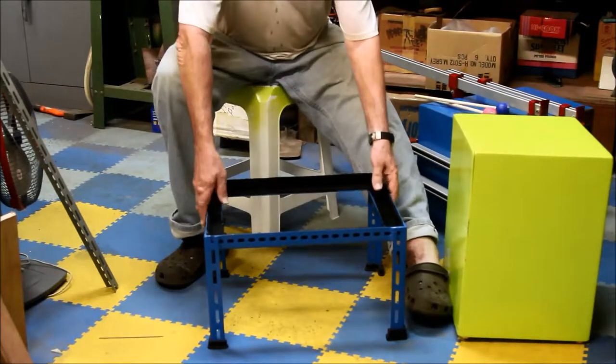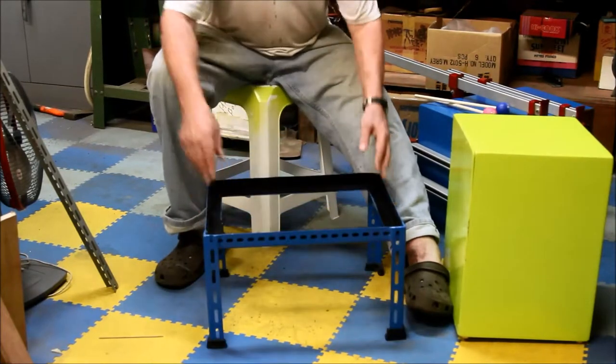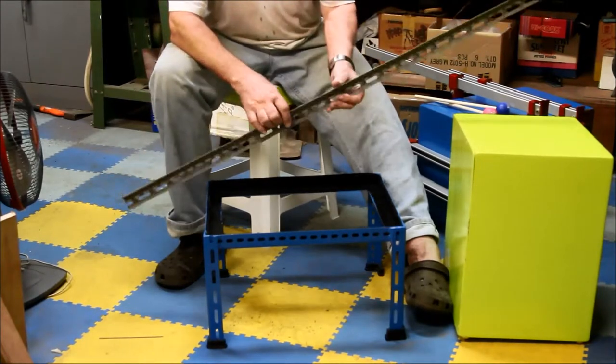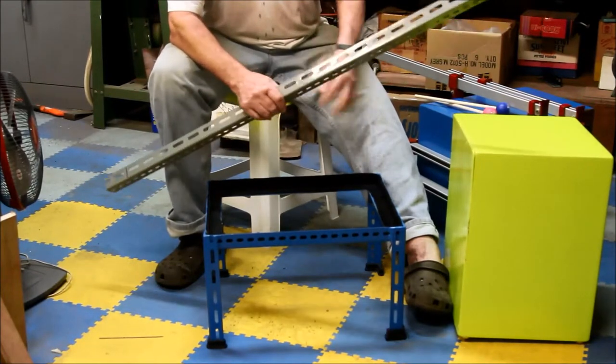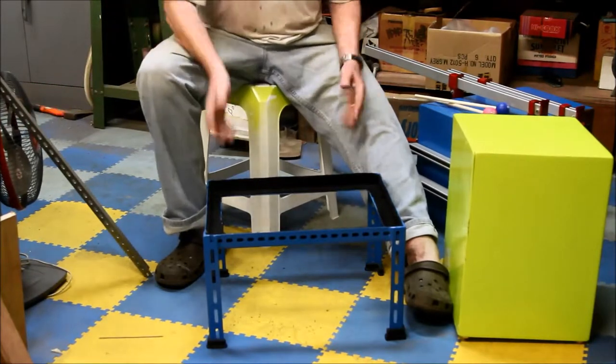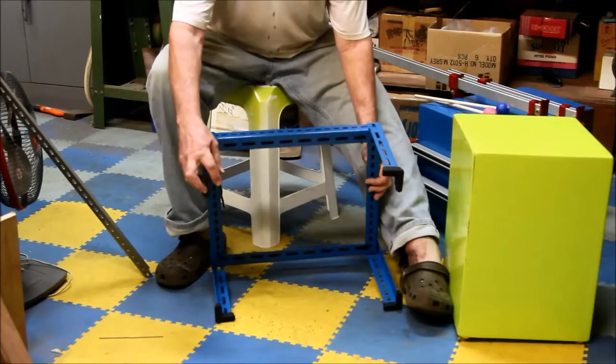We got to thinking why don't we make a little stand to put our cajon on. We had some shelving angle iron laying around the house so we decided we'd just design a little one. We'd make it high enough that we could sit on a stool. We didn't want it to mar the floor so we put little rubber feet on it.